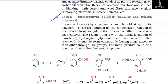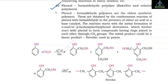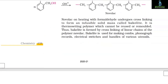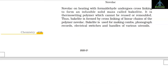4. Phenol formaldehyde polymer (Bakelite and related polymers): Phenol formaldehyde polymers are the oldest synthetic polymers. These are obtained by the condensation reaction of phenol with formaldehyde in the presence of either an acid or a base catalyst. The reaction starts with the initial formation of ortho- and/or para-hydroxymethylphenol derivatives, which further react with phenol to form compounds having rings joined through –CH₂– groups. The initial product could be a linear product called novolac, used in paints. Novolac on heating with formaldehyde undergoes cross-linking to form an infusible solid mass called bakelite, which is a thermosetting polymer and cannot be reused or remoulded.